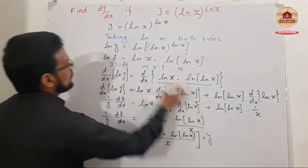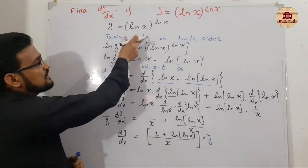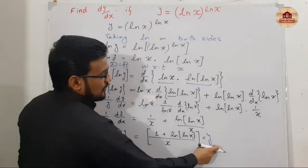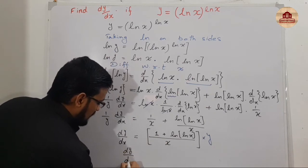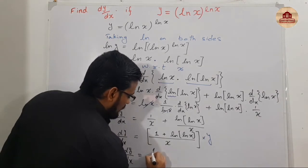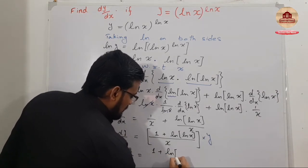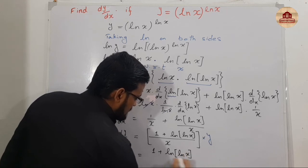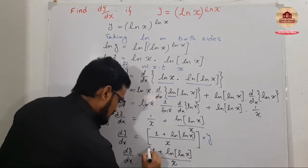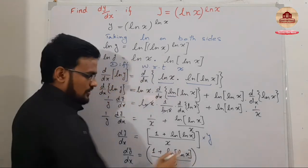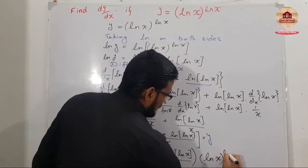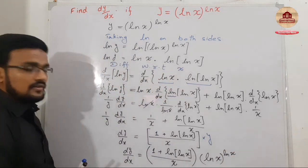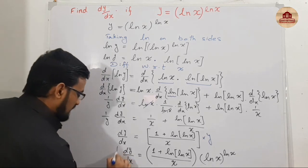When you put the value of y — y is given in the question as ln(x) raised to the power ln(x) — you can find the final result. dy/dx equals (1 plus natural log of natural log of x) divided by x, into y, and y is natural log of x raised to the power natural log of x.